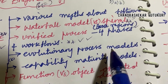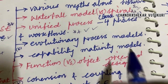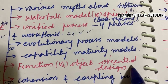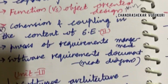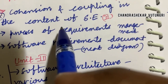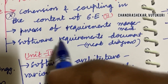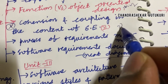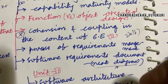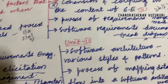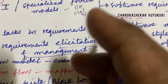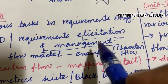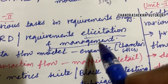Evolutionary process models, Capability Maturity Models, and function versus object-oriented design are also said to be top most questions. The process of requirement management and the Software Requirement Document along with a neat sketch is said to be a 3A or 3B question. If you don't know how to write a 3B paper, a video is posted in my channel — please go through it and write in bullet points to get good marks.